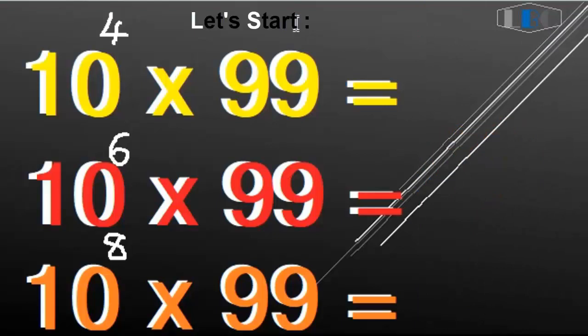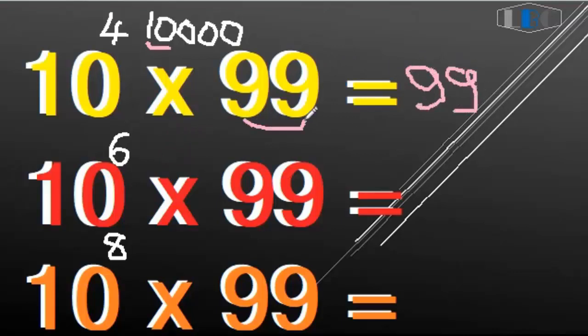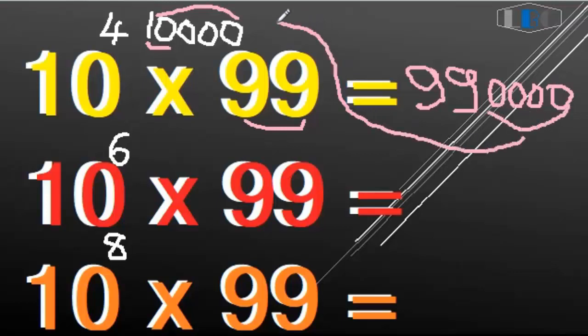10 to the 4th means one and zero to the 4th, or ten thousand. So when we calculate, you can write 99 here and you can add all the zeros - just continue with four zeros. So we write this from here, and 99 we write from here.